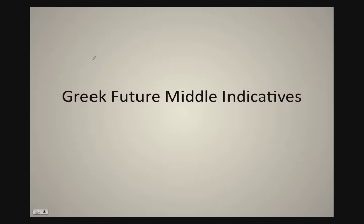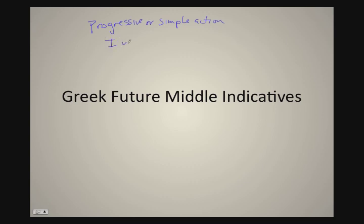The Greek future middle indicative is just as easy as the Greek future active indicative. Like the future active, it's still going to be a progressive or simple action. So we can translate it either as 'I will' — so 'I will cease' — or 'I will be ceasing.'